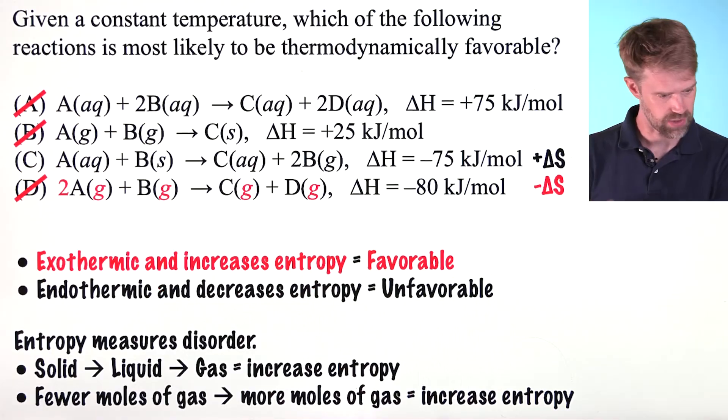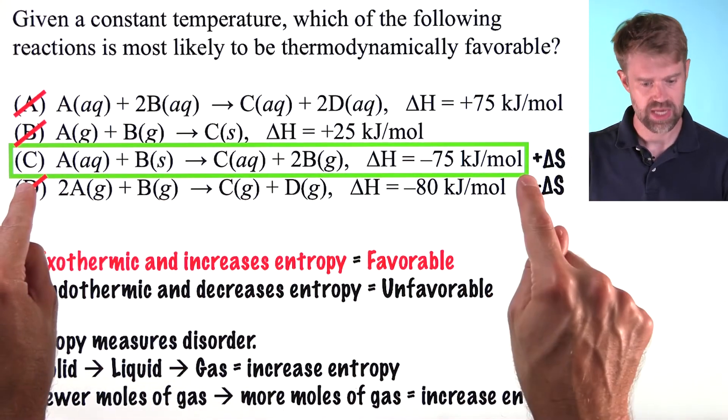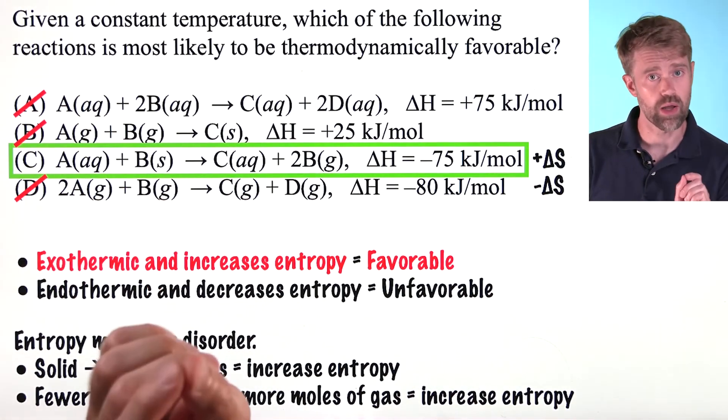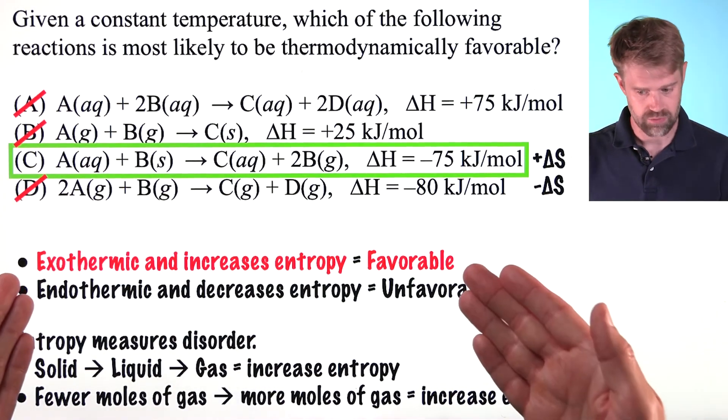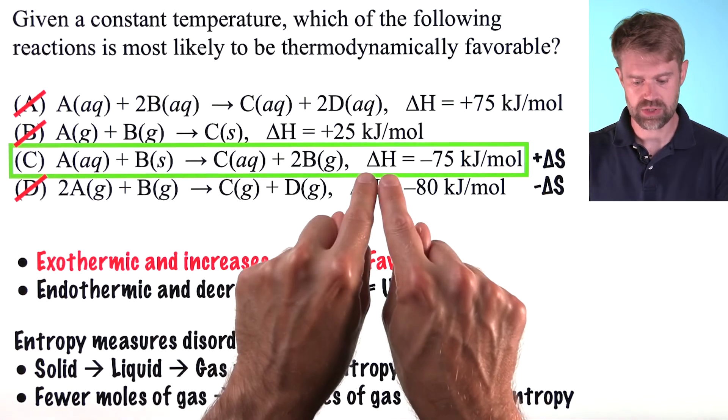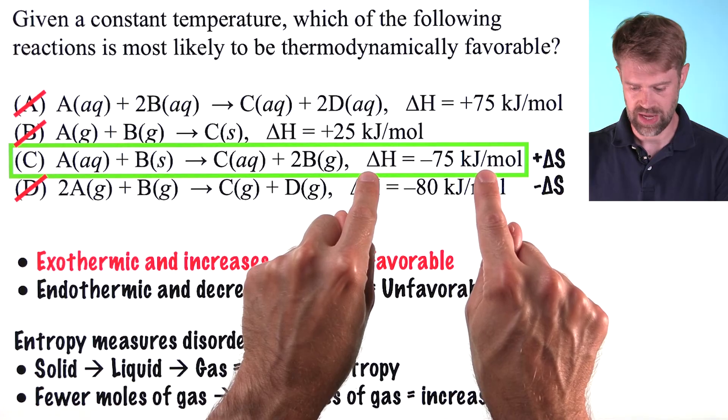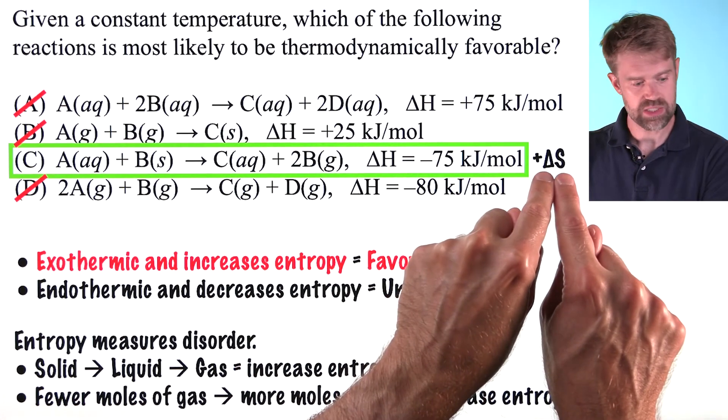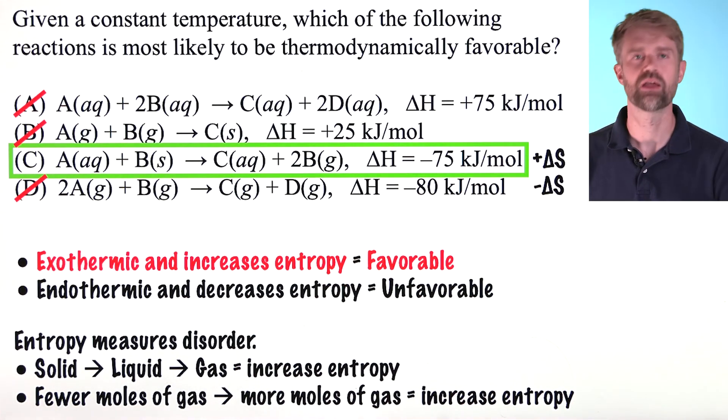So, we can cross off D and the correct answer is choice C. It's the only one that meets both of these conditions. It's exothermic negative delta H and increases entropy positive delta S.